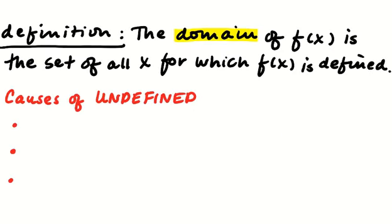Next we're going to talk about domain and range. The domain of a function is the set of all x values where you can plug in x and f(x) comes back defined — basically any place where the function is not undefined. If we're going to look at things algebraically, we need to be aware of what causes something to be undefined.